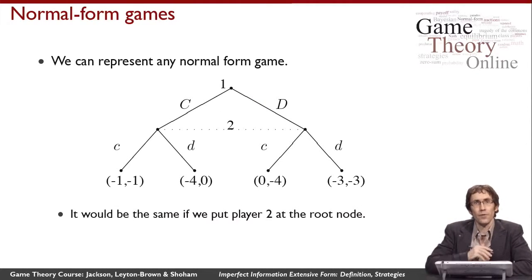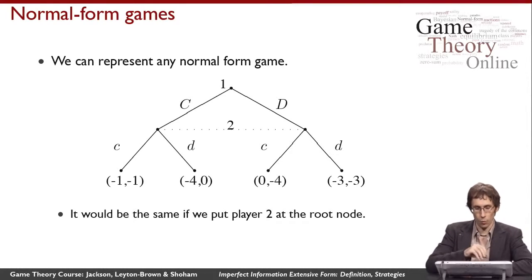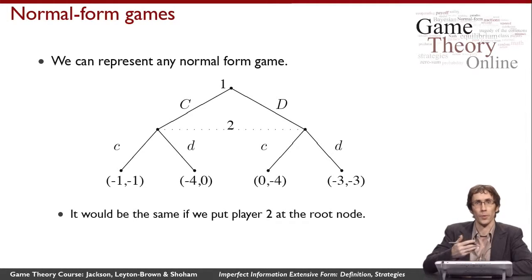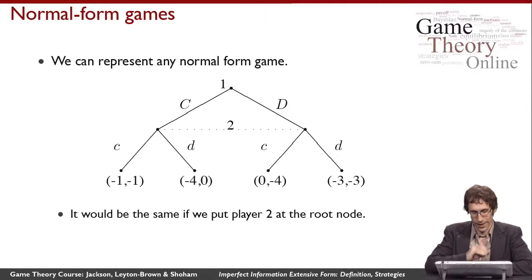In the imperfect information extensive form, we have a more powerful representation than in the perfect information case. One way to see this is that we can represent any normal form game in this representation — which, you may recall, we couldn't do with perfect information games. Here I'm showing how to represent the TCP backoff game, or the prisoner's dilemma, in imperfect information extensive form.